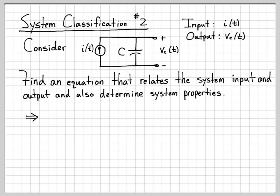The first thing we need to do is write down an equation that ties these two quantities together. Since this current only has one path to flow, I of T completely flows through the capacitor. So we can directly write down the voltage across the capacitor: it's 1 over C times the integral over all time of the current that has flowed through the capacitor. This is the equation that relates the input to the output, and it's what we'll analyze to determine system properties.